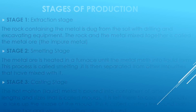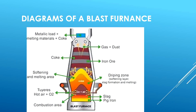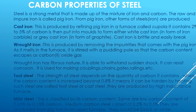Round bars, square bars, wires and other shapes are produced here. We can see the diagram of the blast furnace — the combustion area, the softening and melting area — and all the elements needed for a good furnace are shown.